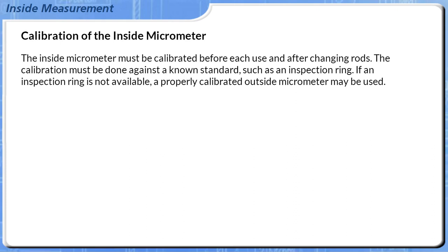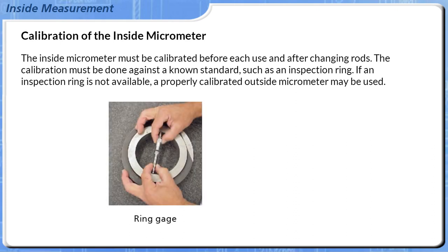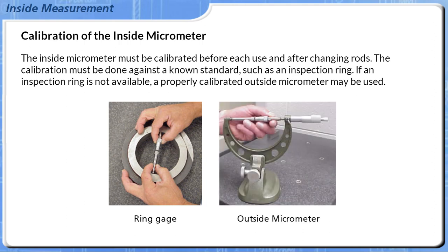The inside micrometer must be calibrated before each use and after changing rods. The calibration must be done against a known standard, such as an inspection ring. If an inspection ring is not available, a properly calibrated outside micrometer may be used.